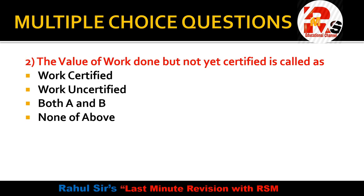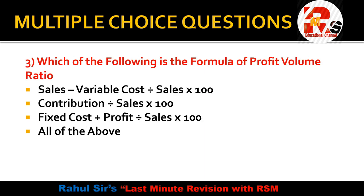Question number 2: The value of work done but not yet certified is called — this is from the chapter of contract costing. Options are: work certified, work uncertified, both A and B, or none of the above. The answer is work uncertified.